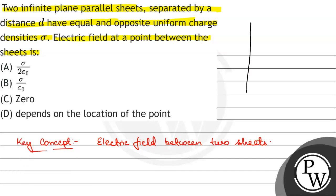This is one sheet and this is the other sheet. This has positive charge density sigma, and this has negative charge. The question states that both have opposite charges but the magnitude of the charge density is the same.